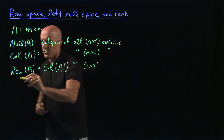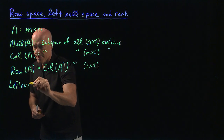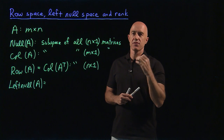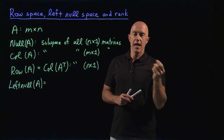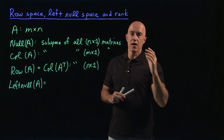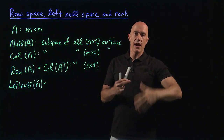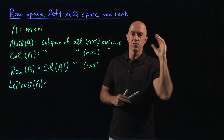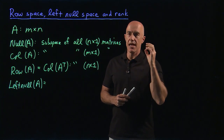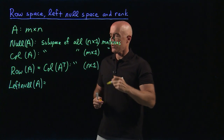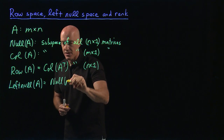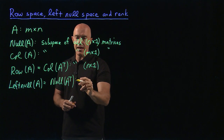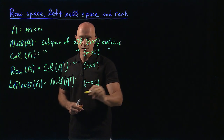Finally, there's the left null space of A. Those are all vectors where you write x transpose on the left: x^T A = 0. Another way of viewing it is to transpose that whole equation, giving A^T x = 0. So the left null space is just the null space of A transpose, and it is a subspace of M by 1 matrices.